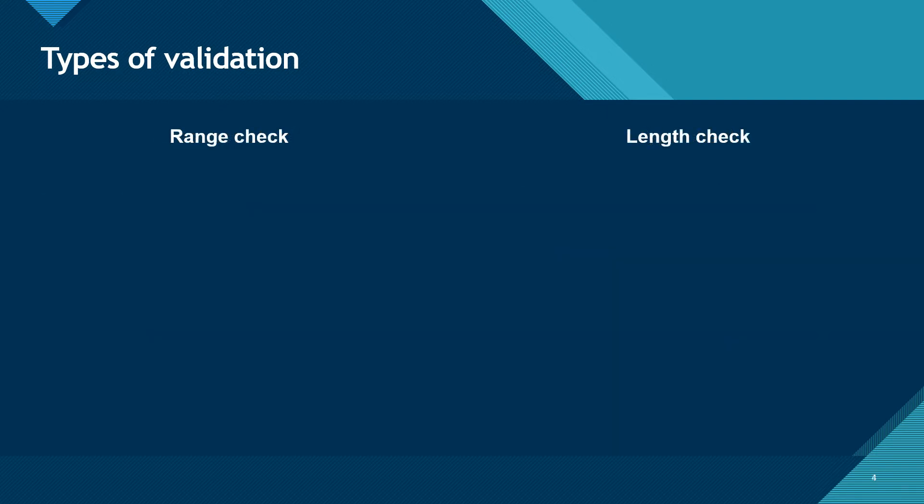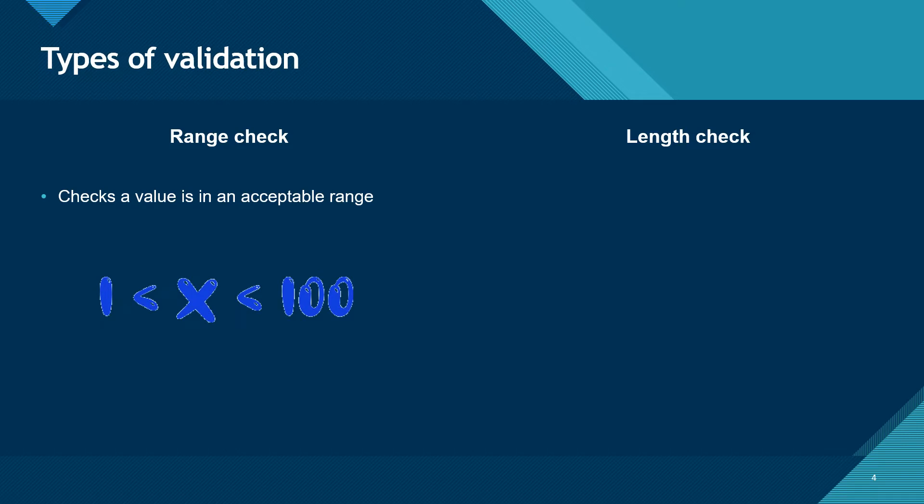A range check allows us to specify an acceptable range for a numeric value that's being entered. This can prevent accidental mistyping such as putting in an extra zero that isn't expected.